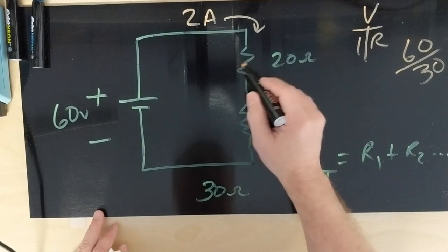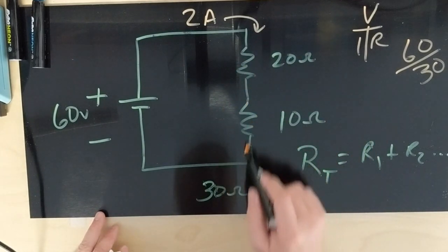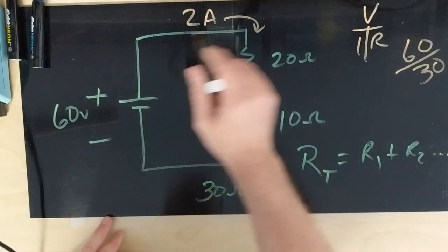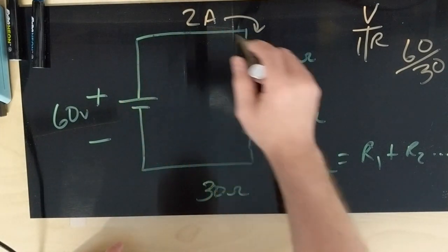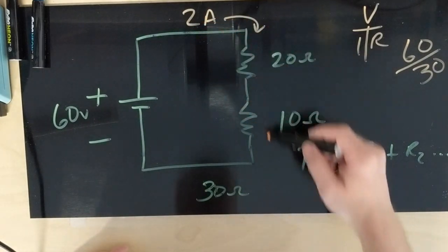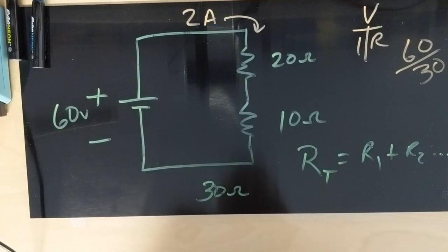That means 2 amps is going to run through this one and 2 amps is going to run through this one, because the total amount of current in a series circuit is the same. The amount of current flowing through any device or any point is the same.